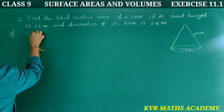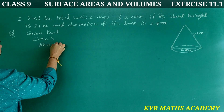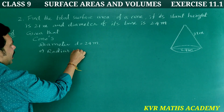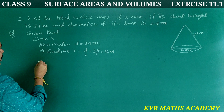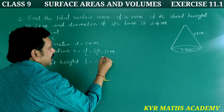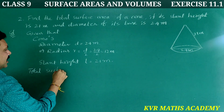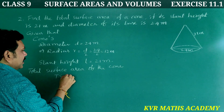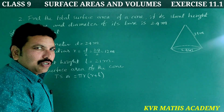Solution. Given: diameter of the cone d is equal to 24 meters, so radius r is equal to 12 meters. Slant height l is equal to 21 meters. Now, total surface area of the cone: TSA is equal to π r into (r plus l). That is 22 by 7, into r which is 12, into (r plus l) which is 12 plus 21, equals 33.